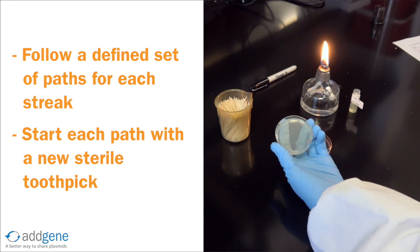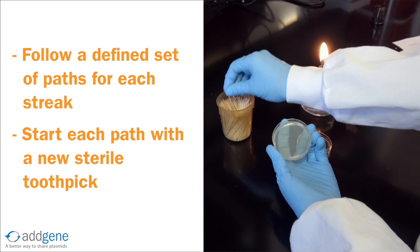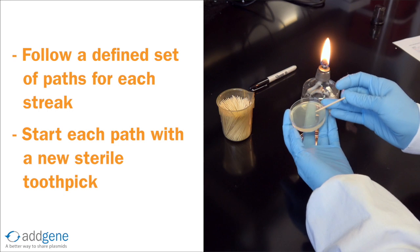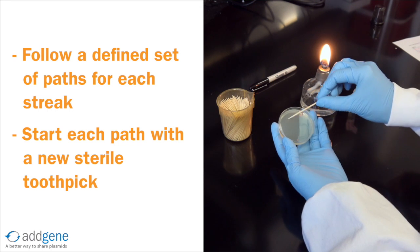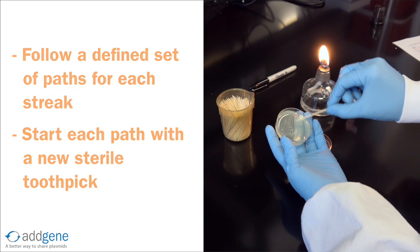Again, we streak over one third of the plate and end the path near the edge. We then repeat this process one final time with a third sterile toothpick. Although we must be careful, the whole process can be performed quite quickly.